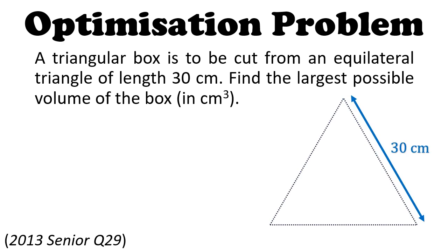We start with an equilateral triangle of length 30 cm. The net of a triangular box is cut from this equilateral triangle, as shown in the diagram. We want the largest possible volume of this box.